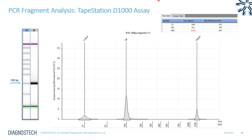The TapeStation can also be used for PCR fragment analysis — whether for amplicon QC, PCR/qPCR QC, or restriction enzyme digests — to accurately quantify and size PCR fragments. For example, a 100 bp fragment run on the D1000 assay shows on the gel image that the fragment perfectly lines up to the 100 bp ladder marker. The generated peak table identifies the three peaks detected in the assay: the lower marker, the sample fragment, and the upper marker, providing both concentration and size for each peak.